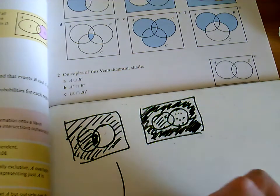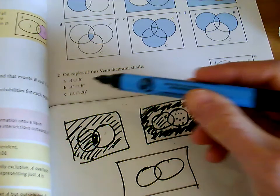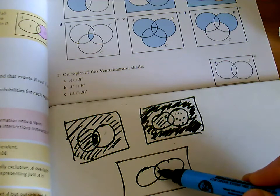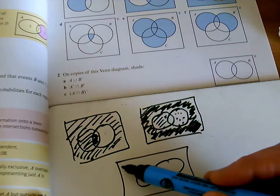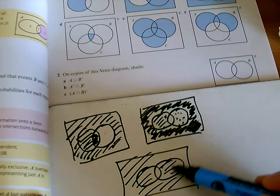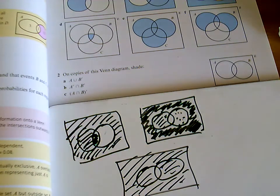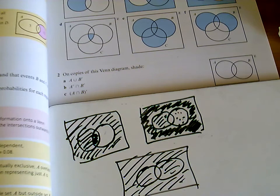And for C, well, you've got A intersection B, which is this bit here. And we want the total opposite of that. So the total opposite of that is everything except the middle, the complement of A intersection B. So that's question two.